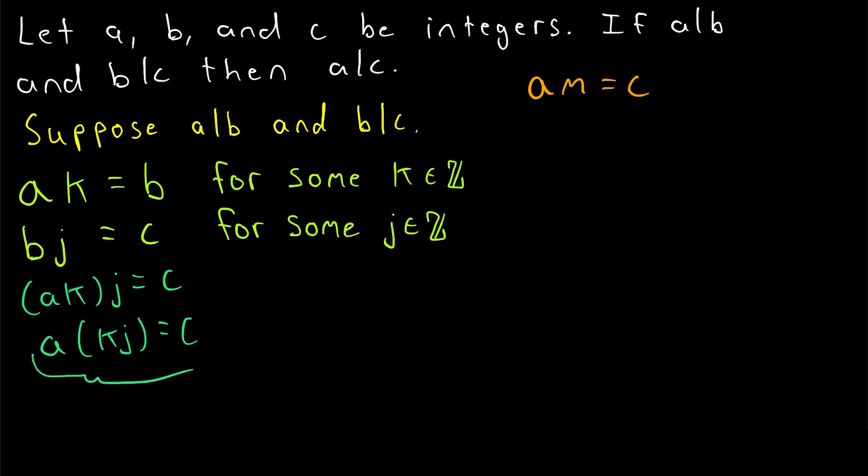And this, my friends, is basically what we want. We know that K times J is an integer because the integers are closed under multiplication. If we multiply two integers, like K and J, we'll get another integer. Thus, we've just shown that there does exist an integer, this one K times J, that when multiplied by A gives us a product of C, which is what we wanted.